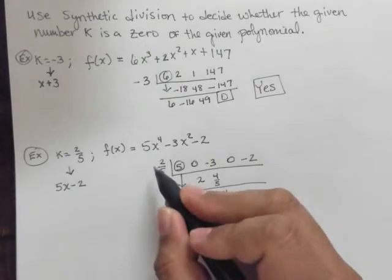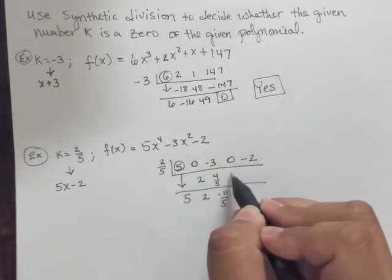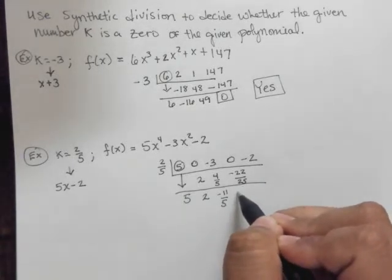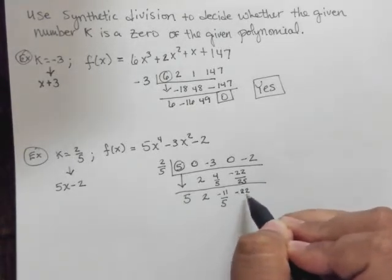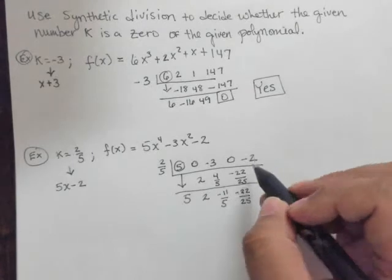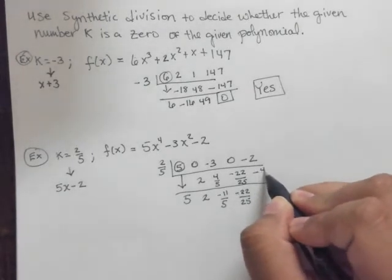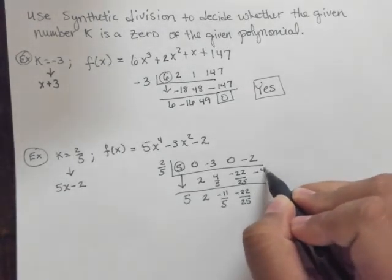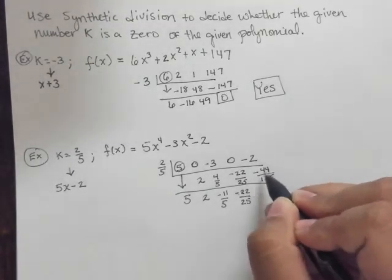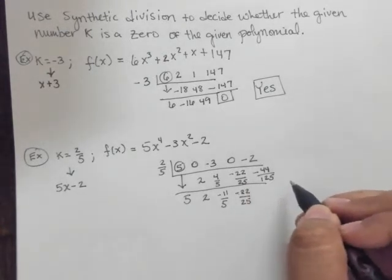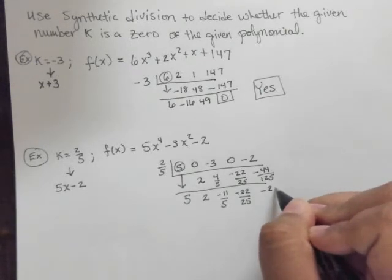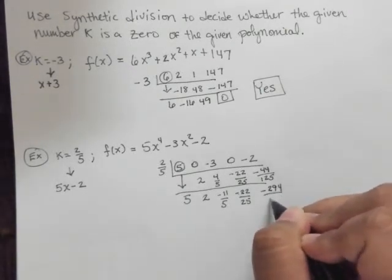And then negative 11 fifths times 2 fifths gives you this negative 22 out of 25. And when you add these, you're going to get again the negative 22 out of 25. And then you're going to multiply that by the 2 fifths. So that gives you negative 44 out of 125. And you're going to take negative 2 and add the negative 44 over 125. And you should get something along the lines of, I believe it's negative 294 out of 125.